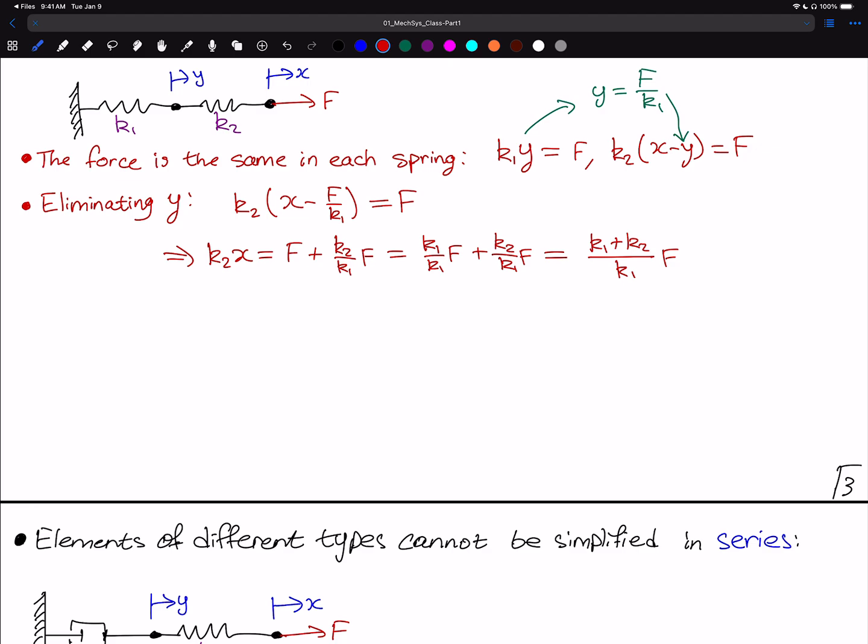We can write this as K1 over K1 F, and then we can combine these two fractions and we'll find that we get K1 plus K2 divided by K1 multiplied by F. From here, we can divide by K2, and we'll then have X equal to something equivalent to F. Or X divided by F, that's the inverse of a spring constant. A spring constant is a force divided by a displacement. So we know then that the equivalent spring constant must be equal to F divided by X, which we're going to call K sub EQ.